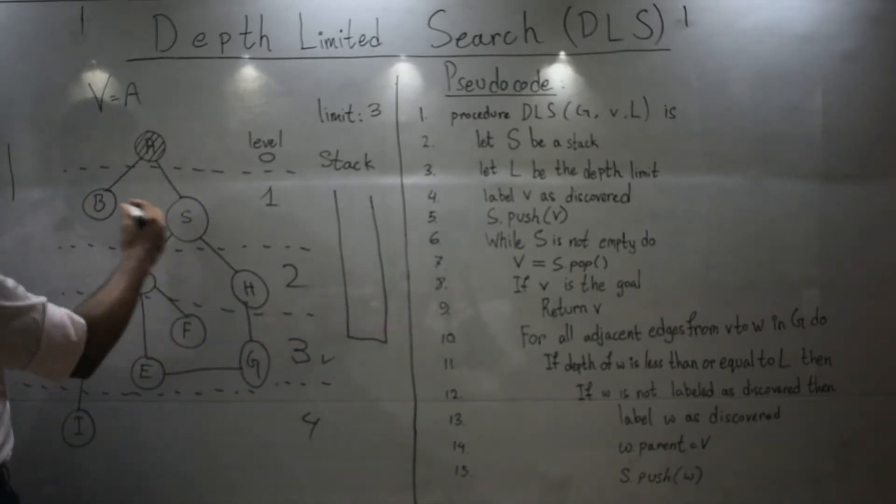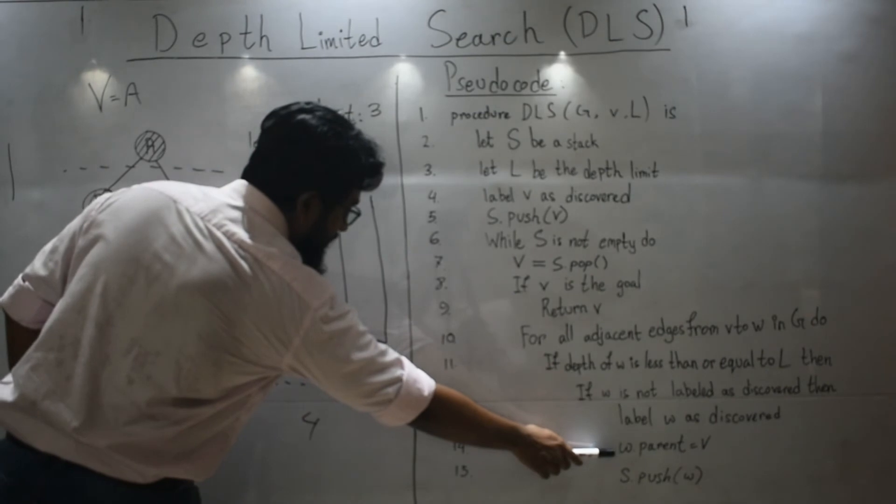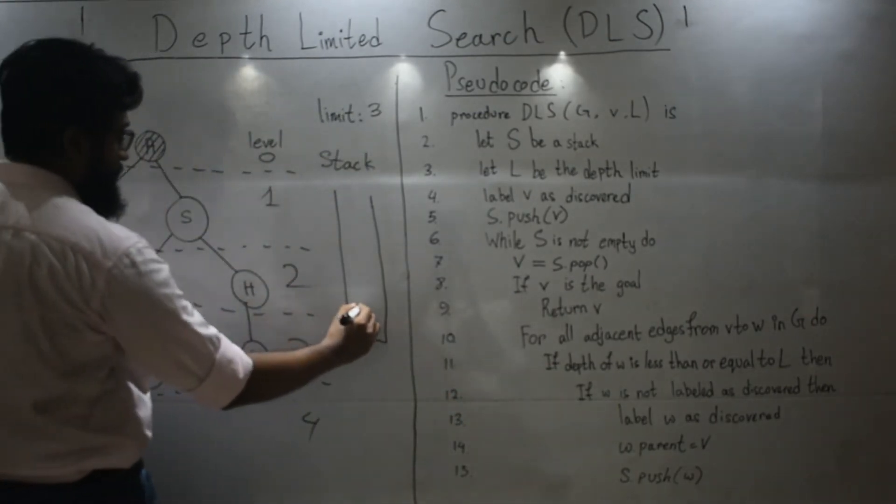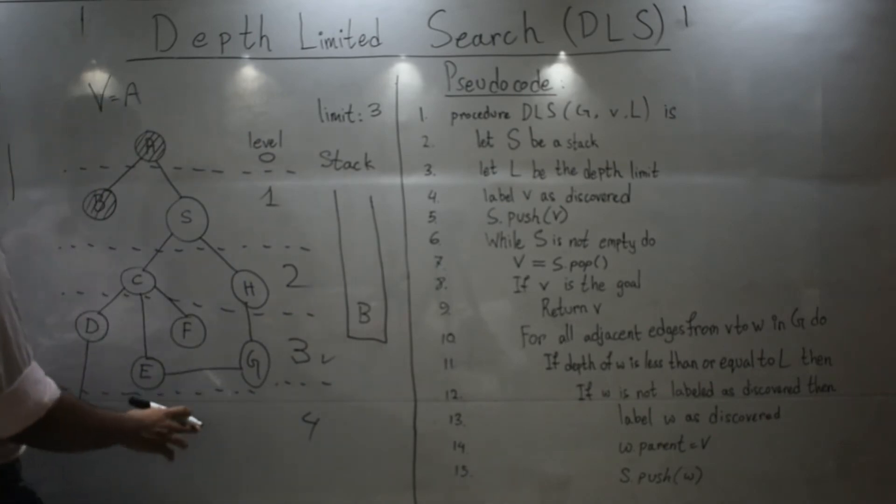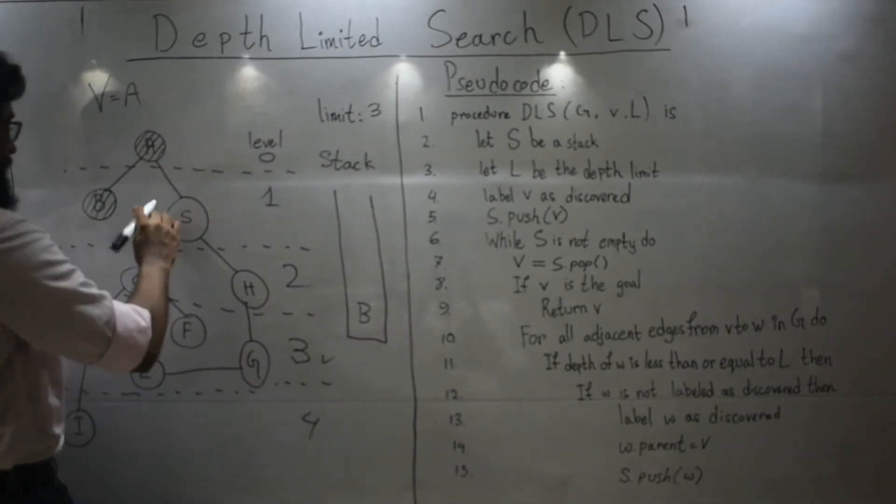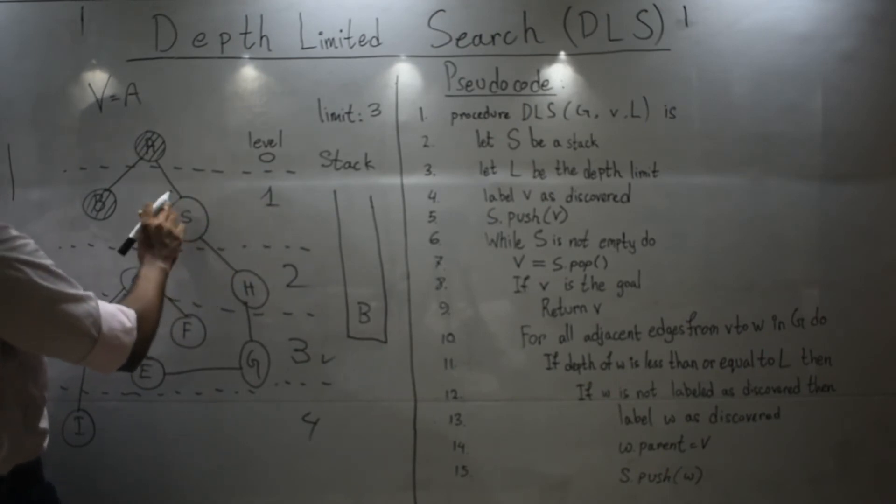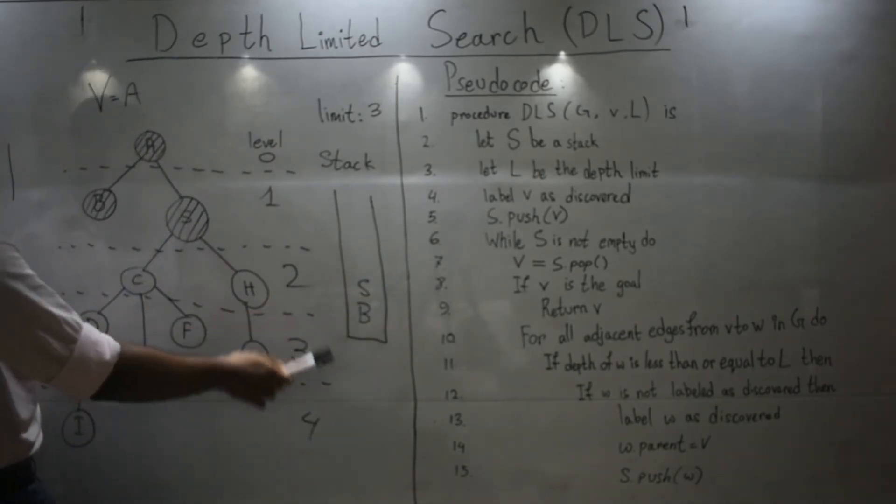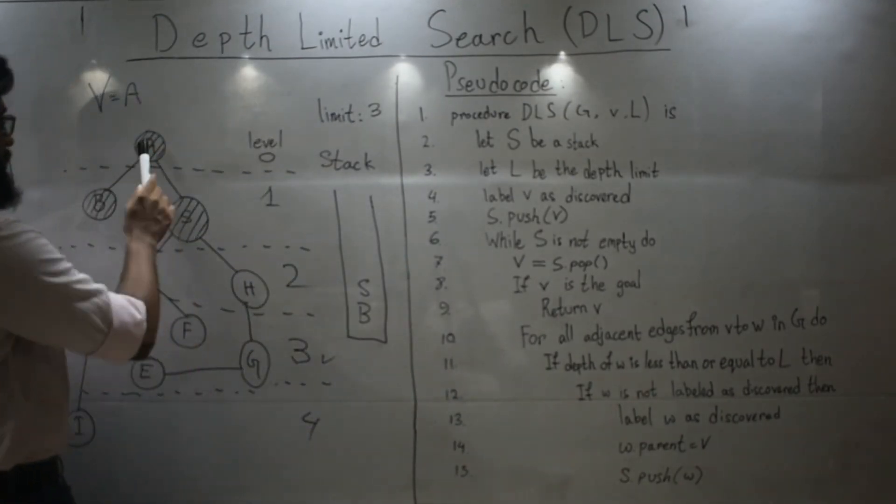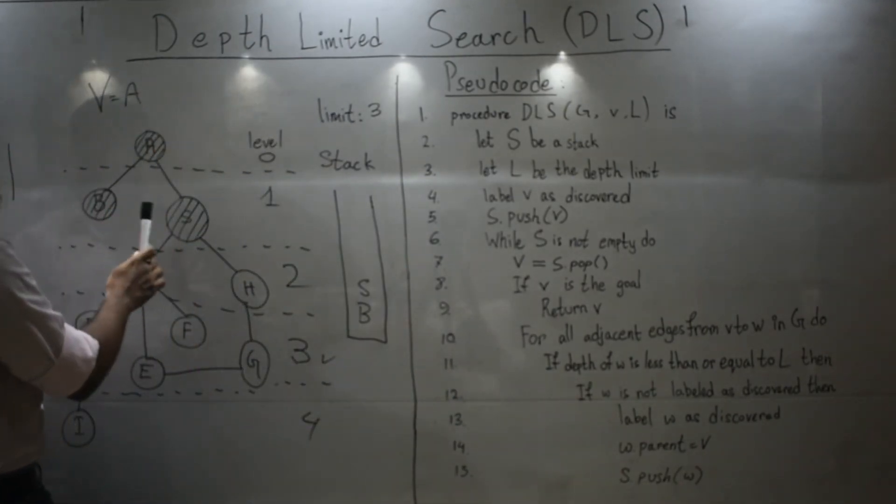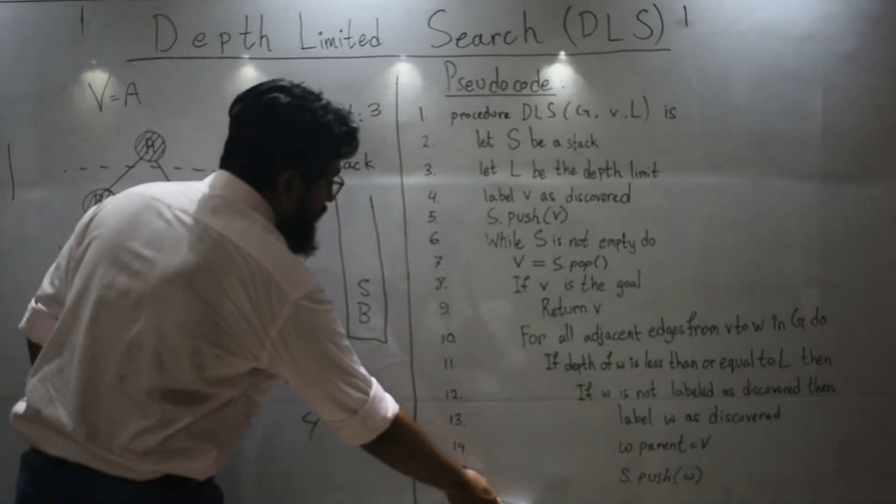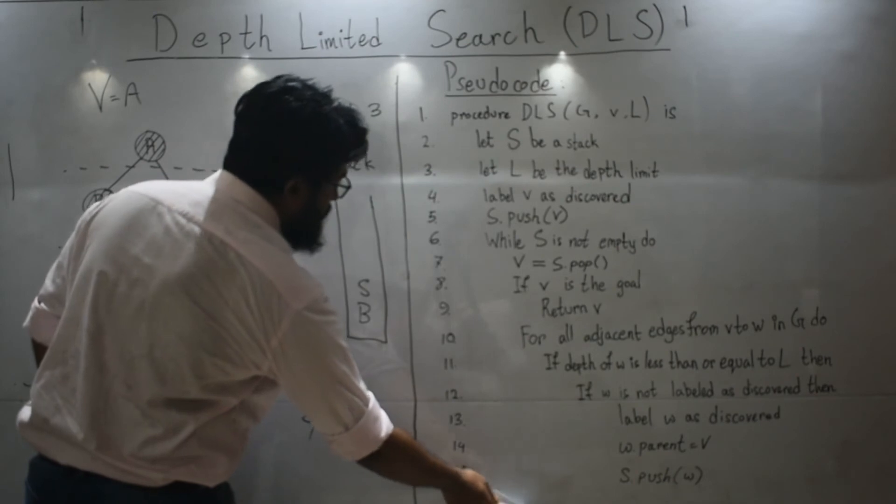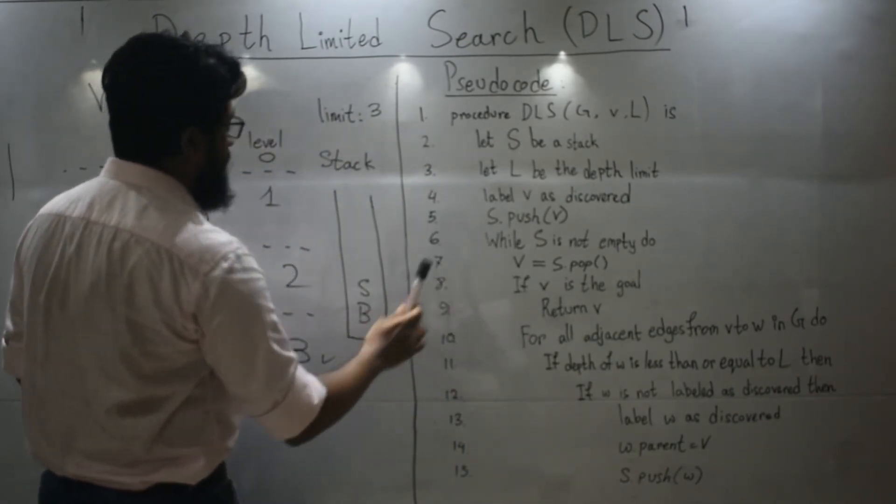So, what are we going to do? We are going to discover them. And then, this is not graphically shown. Then we are going to push them. B. Again, from here. S is within the limit and it's not discovered. So, we will discover them. And then, after that, we will see that all the neighbors of A have been discovered. So, we will break out of this loop and then come again to line number 7.